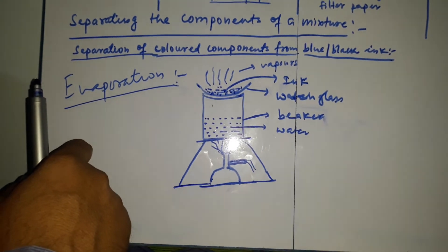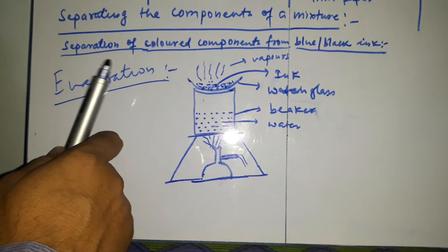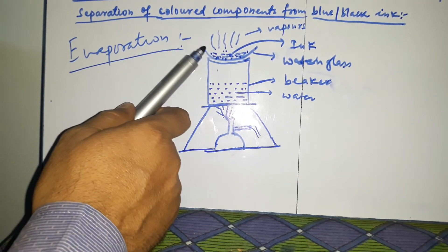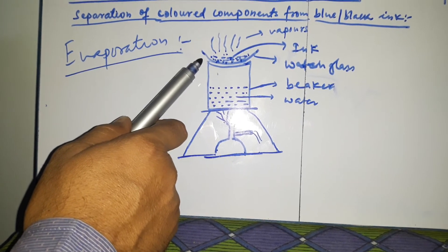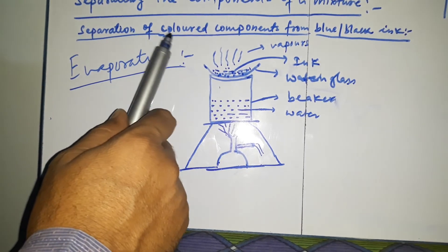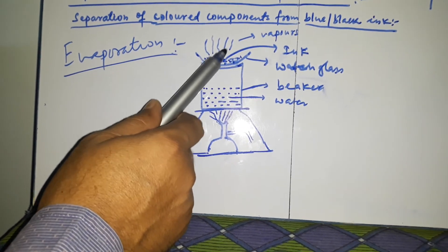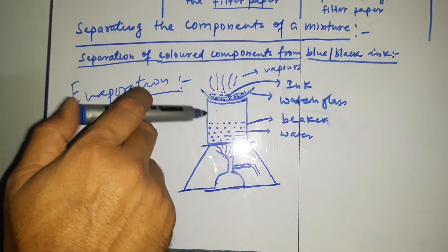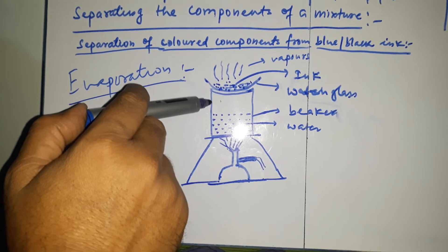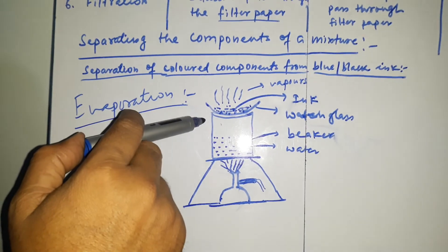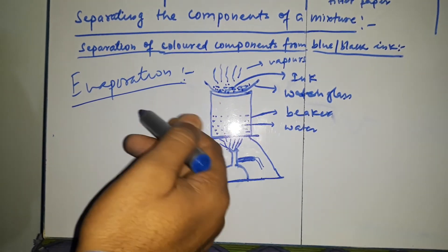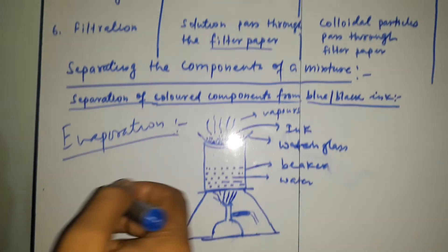One question arises: why have we not heated this mixture directly on the burner? The reason is that it will not be a gentle heating. If we heat the watch glass directly on the burner, it will not be gentle and it may burn the dye or color. For gentle heating, we applied this process — we kept the watch glass on the beaker containing water, and slowly the water vaporizes and the dye remains left. So this method is called evaporation, through which we have separated dye from water. There are many more methods and we will see them one by one in the next class.